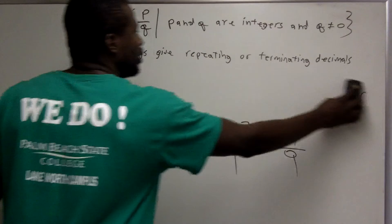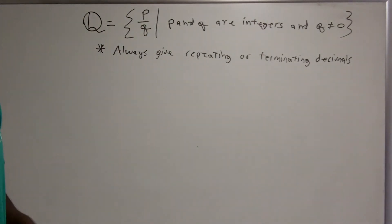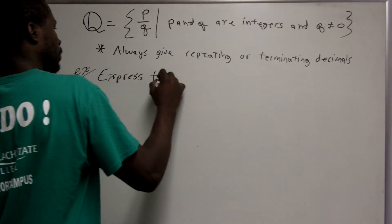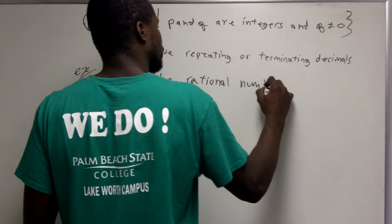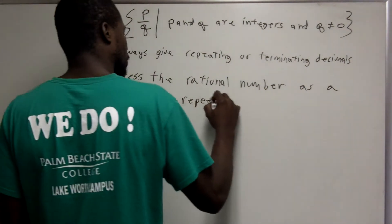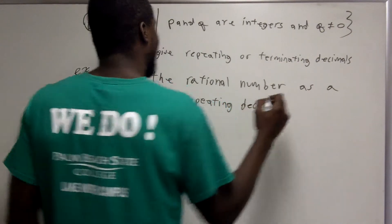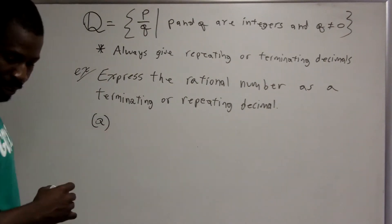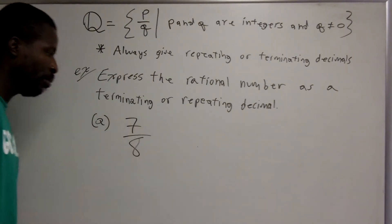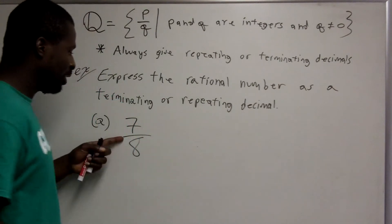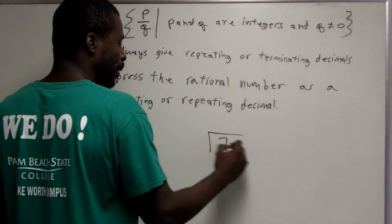Now we're going to express rational numbers as terminating or repeating decimals. Anytime you have a rational number — a quotient of two integers — the answer will always be a terminating or repeating decimal. So we're guaranteed to get either a terminating or repeating decimal if we have a fraction where both the numerator and denominator are integers. In order to change a fraction to a decimal, you divide the numerator by the denominator.